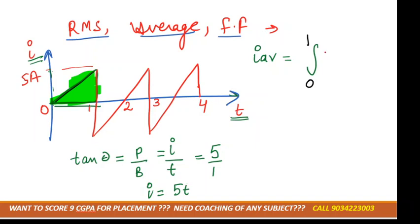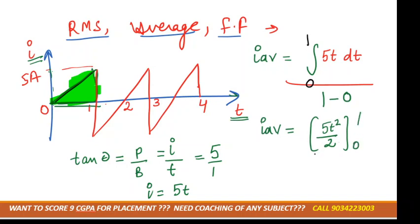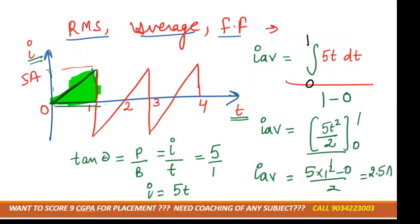Substituting i = 5t into the formula: I_average equals the integration of 5t dt from 0 to 1, divided by the base length (1 − 0 = 1). Because it is a symmetrical waveform, we only take the positive half. Solving the integration: 5t²/2, evaluated from 0 to 1, divided by 1, gives 5 × 1² / 2 = 2.5 amperes.